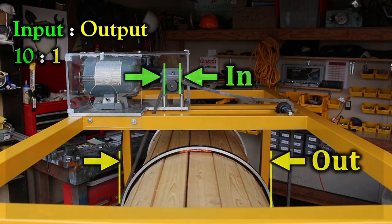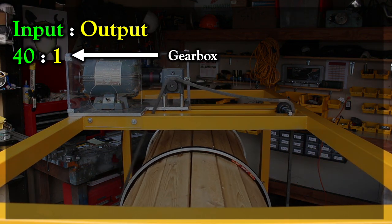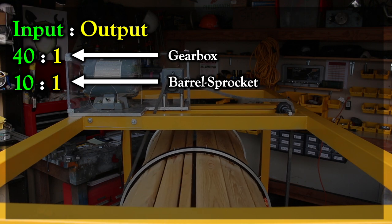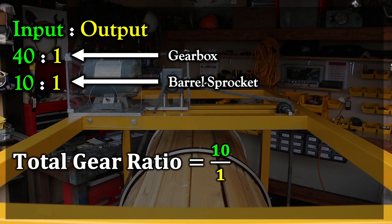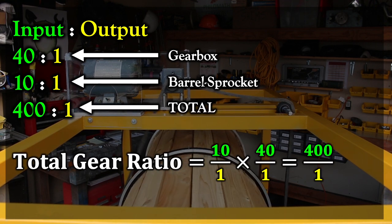And our total gear ratio, considering both the gearbox and the barrel sprocket interface, is 10 times 40, or 400 to 1.